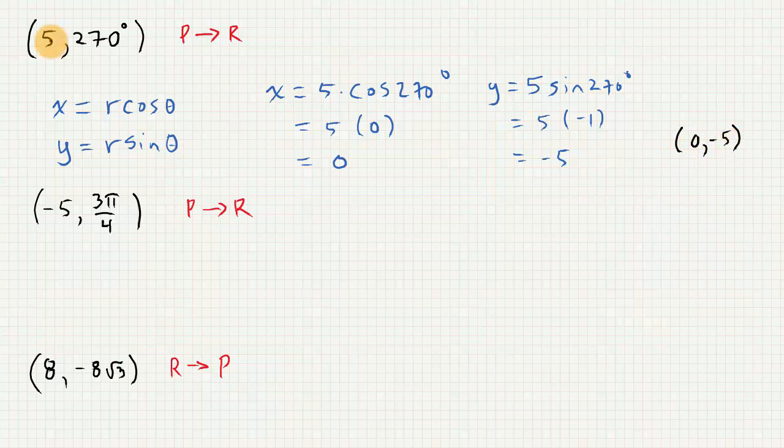You can also visualize that from looking at this point. This says go to 270 degrees, which is the negative y-axis, and go out 5 units. So that would put us at 0, negative 5.